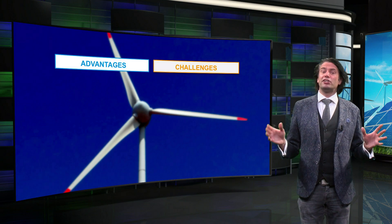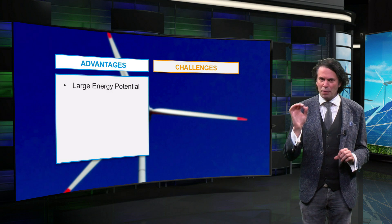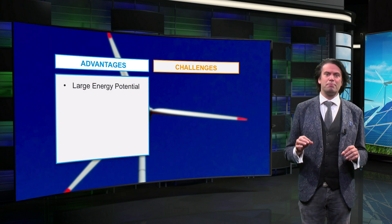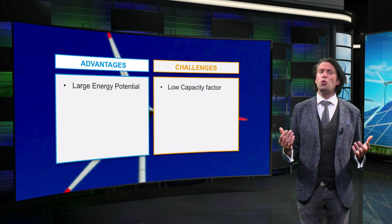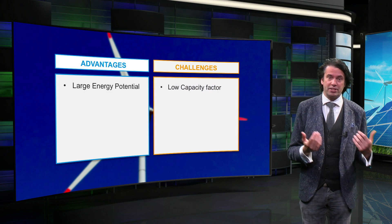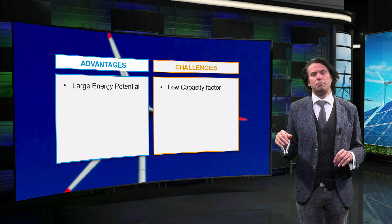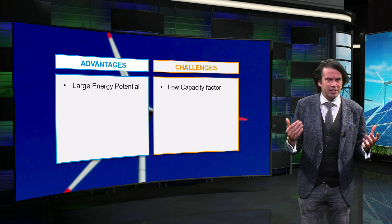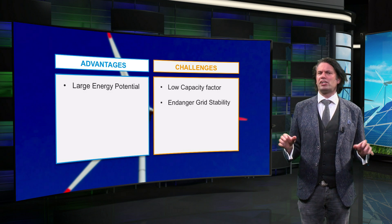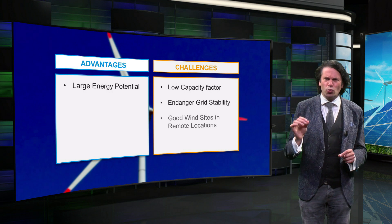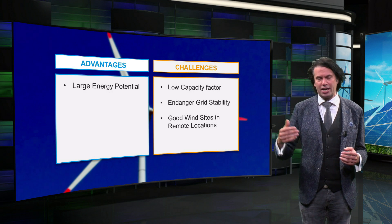The greatest advantage of wind power technology is the large energy potential — wind power can provide multiple times the world's need for energy. However, wind turbines do have a relatively low capacity factor of around 0.3. Moreover, their intermittent behavior can jeopardize the grid's stability. Also, even though wind turbines can be built anywhere, good wind sites are often in remote locations, far away from the energy demand.